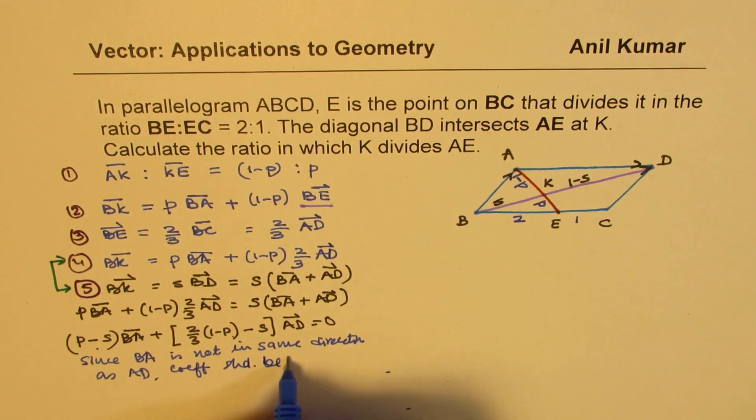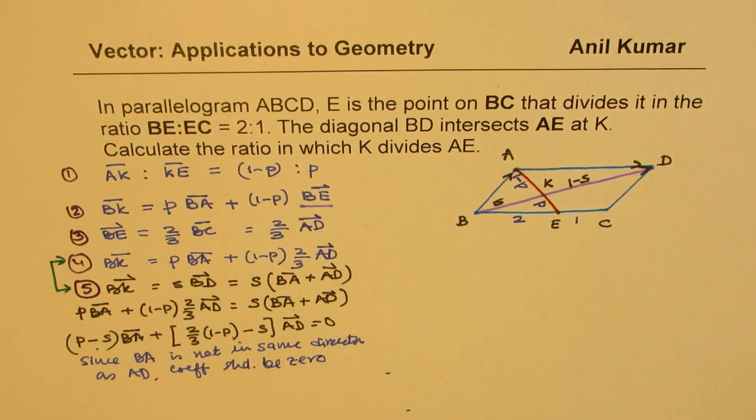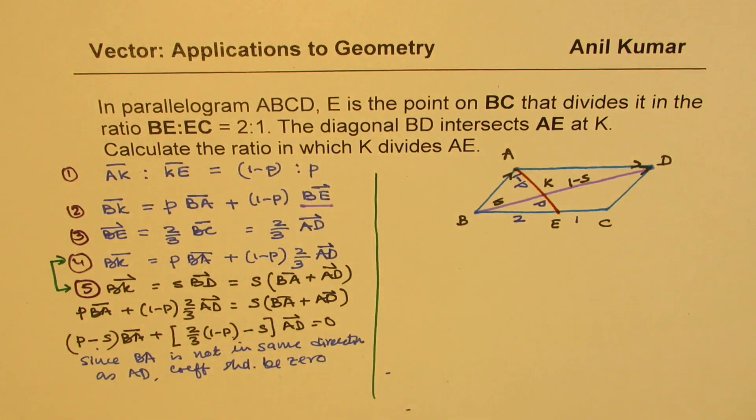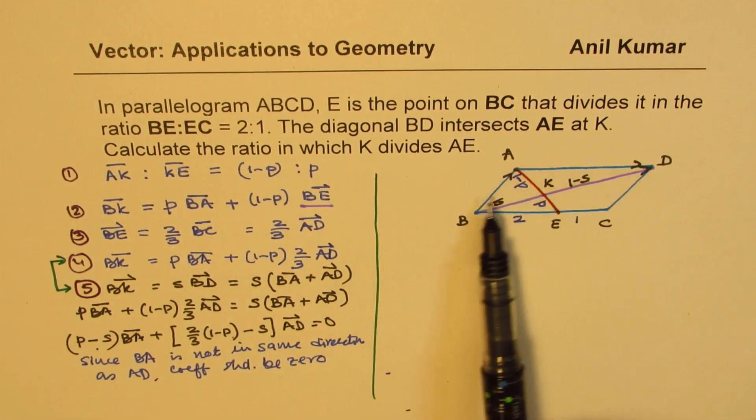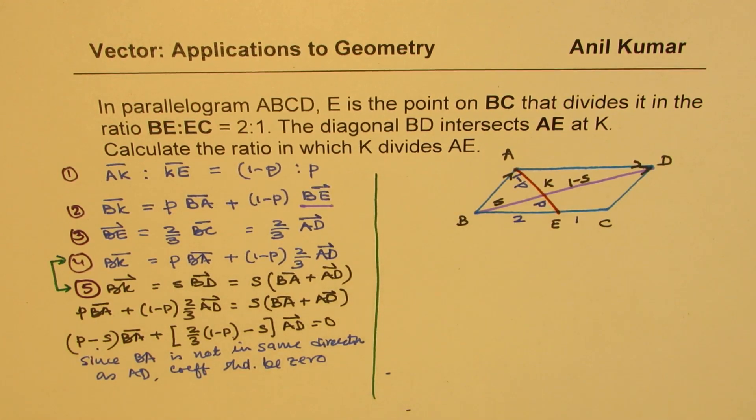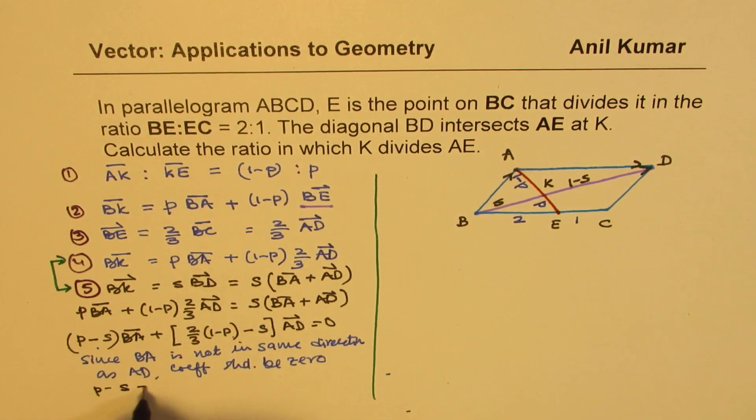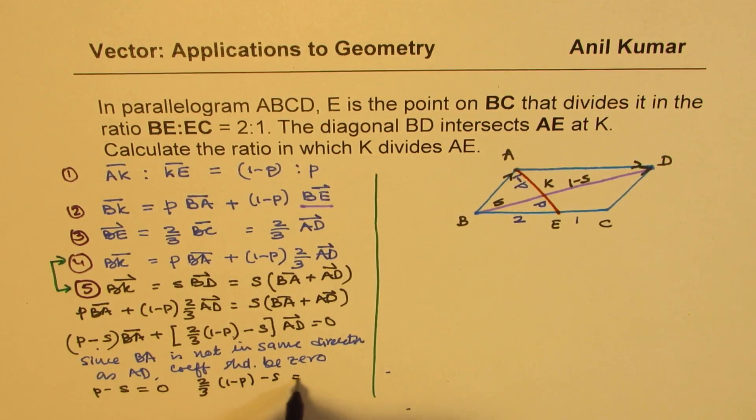Now, since BA and AD are non-collinear, this linear combination could only be 0 when individually the coefficients are 0. So we're saying that since these two vectors are not parallel, we cannot have this sum be 0 unless P-S = 0 and 2/3(1-P) - S = 0.